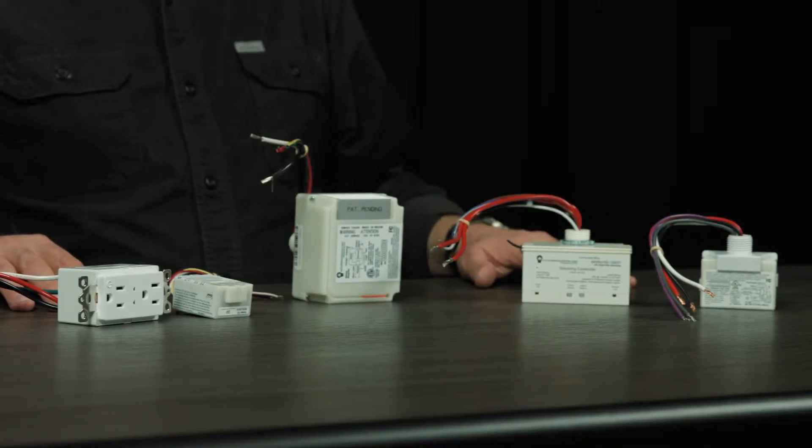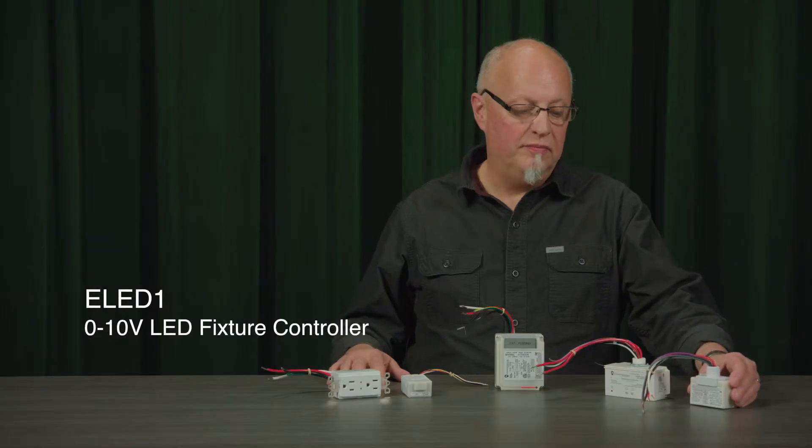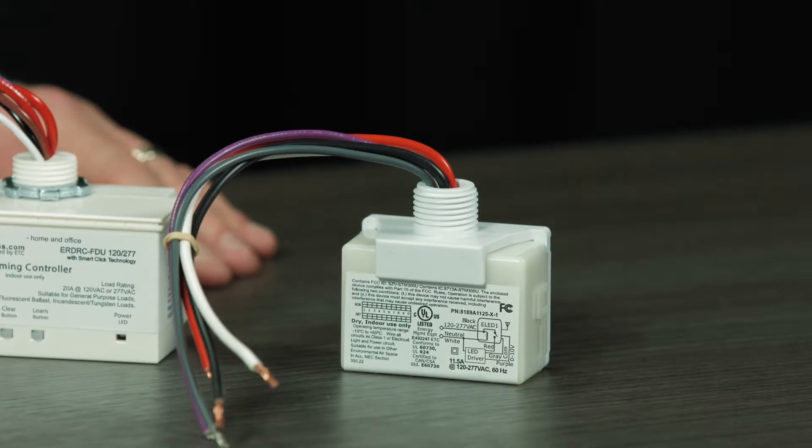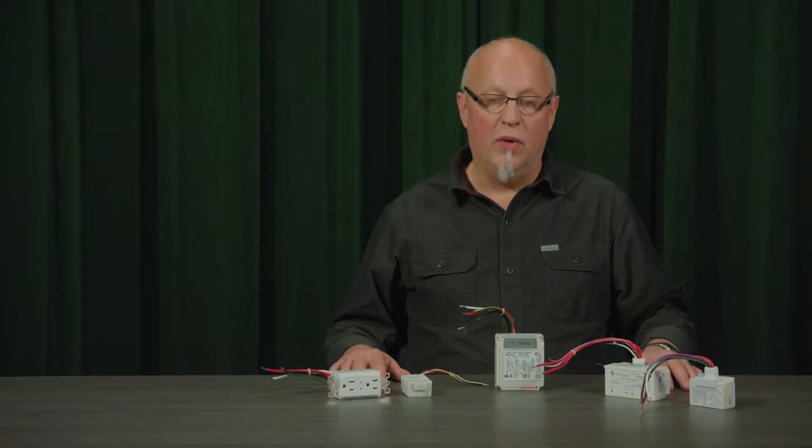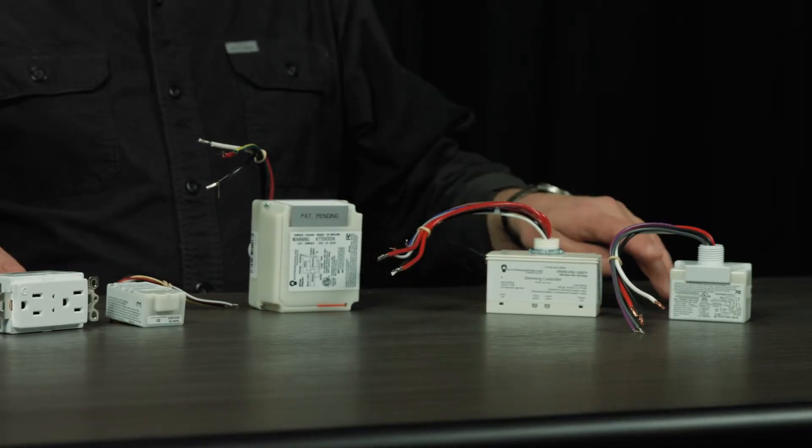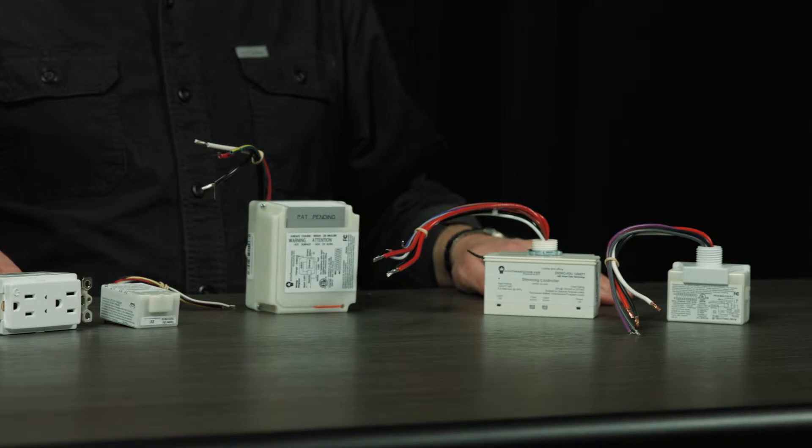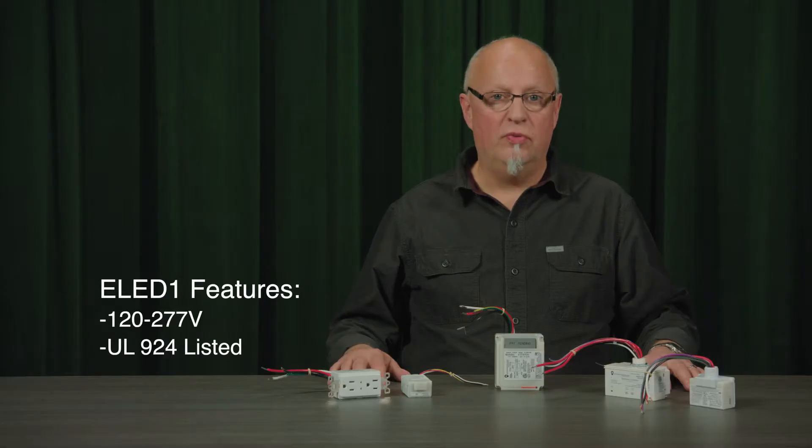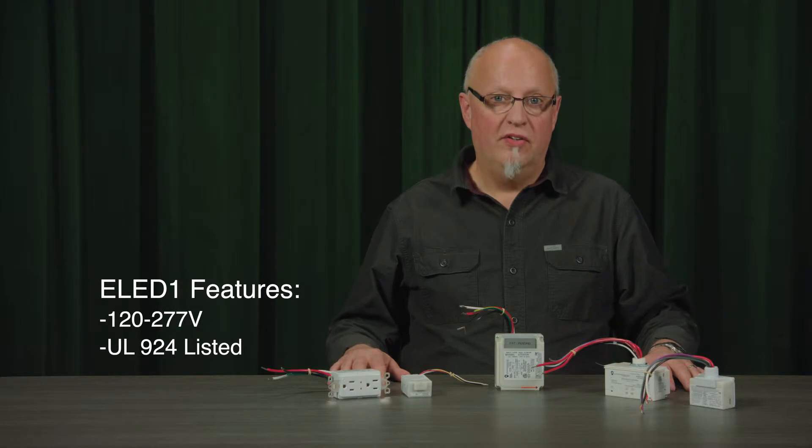Starting on my left is our newest product, the E-LED1. It is a 0 to 10 volt controller. Its power supply is versatile, going from 120 all the way through to 277 volts. It is a power pack style that I've got here, but it comes also in a strap mount model for use inside fixtures. It is a UL924 listed device and is applicable for emergency lighting fixtures as well.